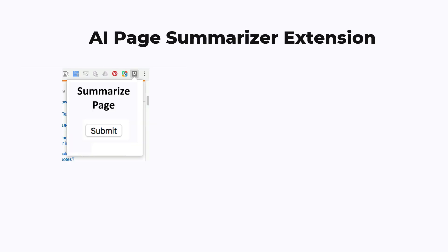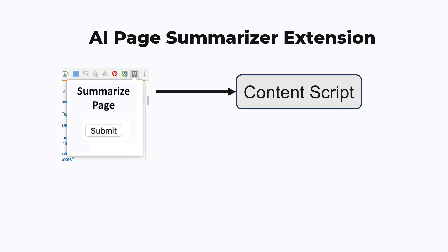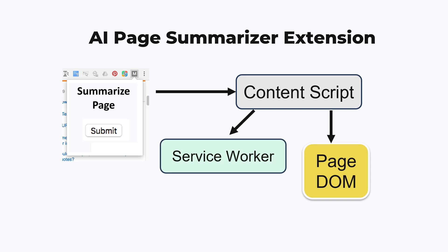Let's do an example of a Chrome extension that summarizes the current page using AI. We start with the user triggering an action on the pop-up window, but the pop-up window has no permission to read the contents of the current page, so it needs to send a message to a content script injected onto the page, which has access to the page DOM. The content script knows it needs to summarize this page, but it does not have permission to query the backend, so it needs to send the message to the service worker. A listener on the service worker has the permission to make a fetch request to the backend. If everything goes well, the service worker now has the AI summary, but it still has no way to display this information to the user, so it uses message passing again to the content script. The content script then renders the information to the user on the page, for example by replacing parts of the page DOM with the AI generated summary.